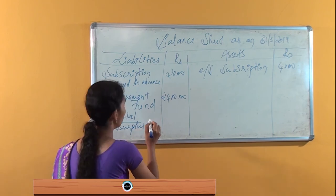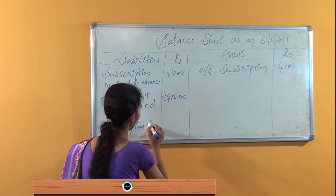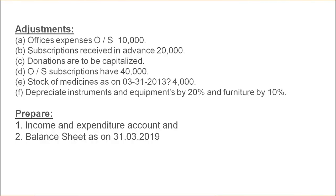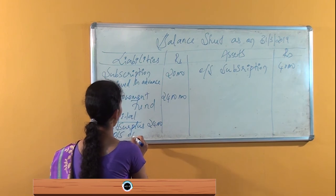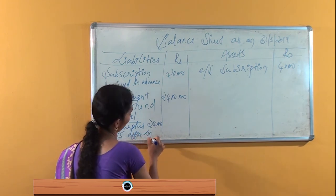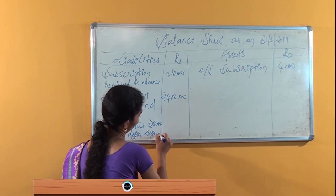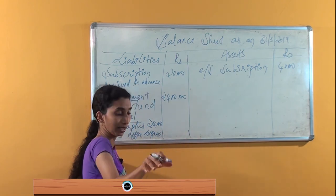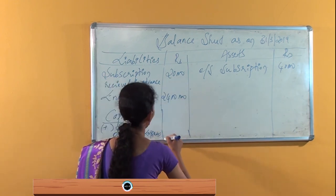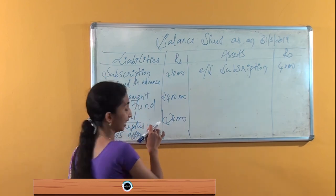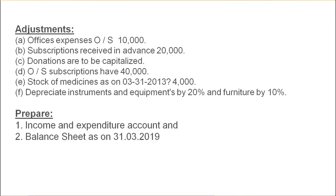The net profit from the income and expenditure account is 24,000, and this is taken as capital. Outstanding office expenses are also recorded, which is 10,000.